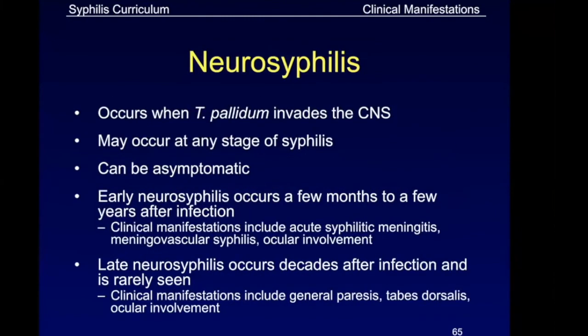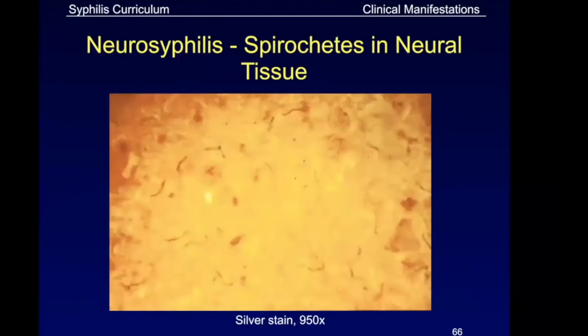Neurosyphilis is a complication of untreated primary or secondary syphilis involving the CNS. It can occur a few months to decades after infection. Patients can initially be asymptomatic until manifestations appear, so you have to work up the patient for this complication.